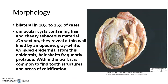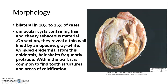Teratomas have structures arising from all three germ layers. You are seeing the ovary — a cystic ovary where the whole ovary is transformed into a cyst. This is the cut surface. The cystic ovary was filled with pultaceous material, which is a paste-like material. That material has been removed in this specimen.